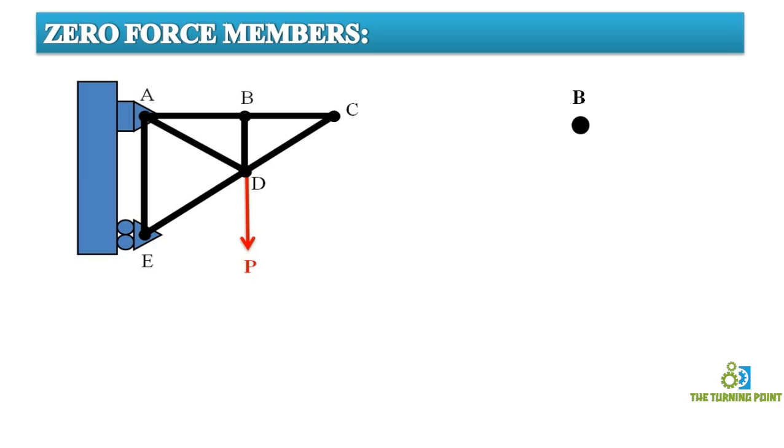I am assuming that along each and every member there is tensile force. So when I consider member AB, there is tensile force along member AB. So I have represented like that. When I consider member BC, along that away from the point like that.